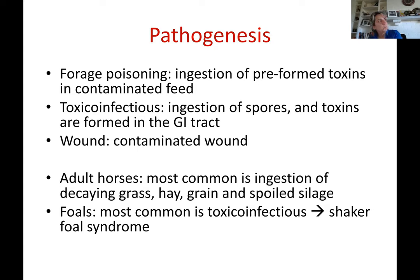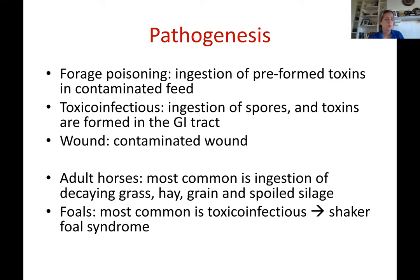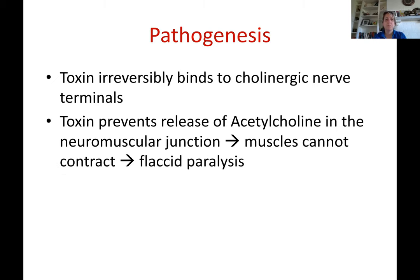In shaker foal syndrome, foals would try to nurse, start shaking, and collapse, with froth at the mouth because they were unable to swallow the milk. This was later identified as botulism, with toxins forming in the GI tract as foals grazed beside their dams. The third pathway is wound contamination — just like tetanus, botulism can develop in contaminated wounds such as castration wounds, since Clostridium botulinum is an anaerobic bacterium.